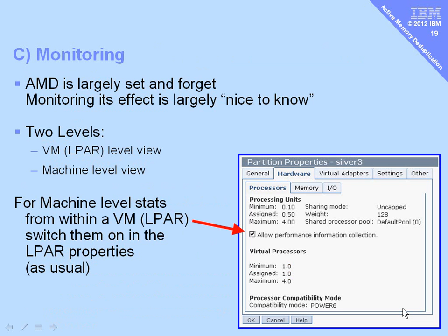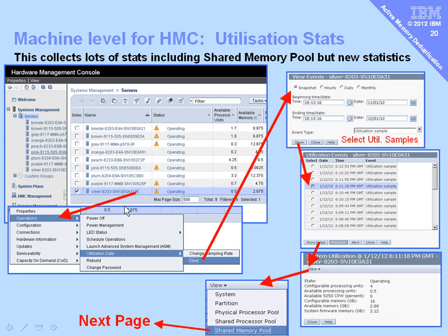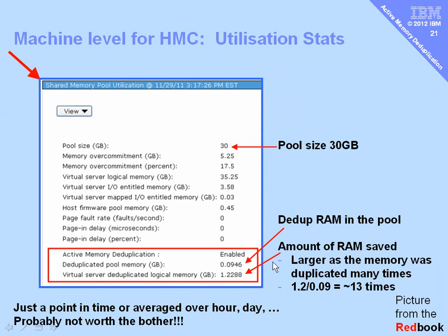Now let's turn to monitoring. Although AMD is largely set and forget, it's nice to check now and again to see how well we're doing. There's information available at the LPAR level or at the whole pool level. For machine-level data, we need to switch on performance information collection as normal on the HMC — this also gives you CPU pool stats, so it's useful anyway. To get the data from the HMC, select the machine and click the button, then go to Operations, Utilization, Data. You can change the sampling rate there, then go to View, select the snapshots — hourly, daily, or monthly — and the time period. Then select the specific snapshot, show the details, go to View, and select the shared memory pool to reach the AMS pool statistics.